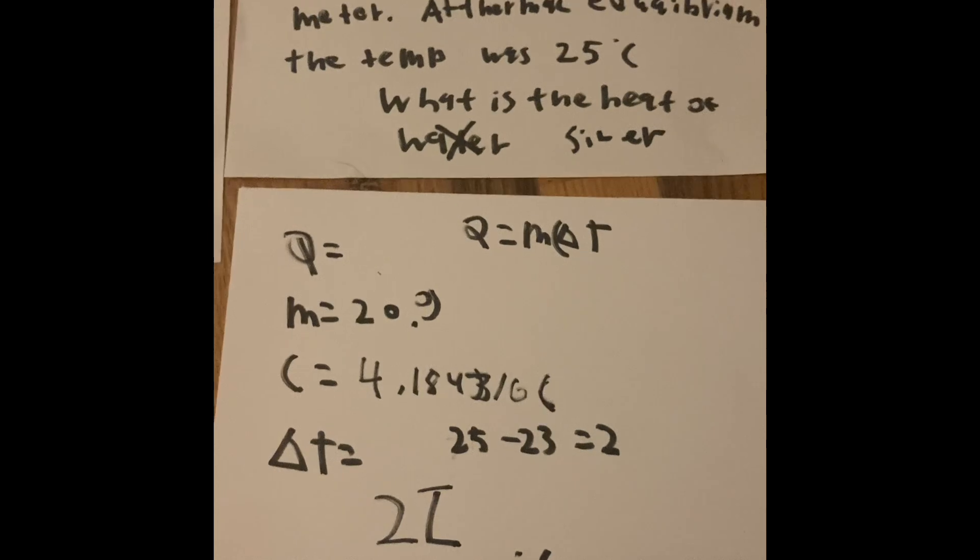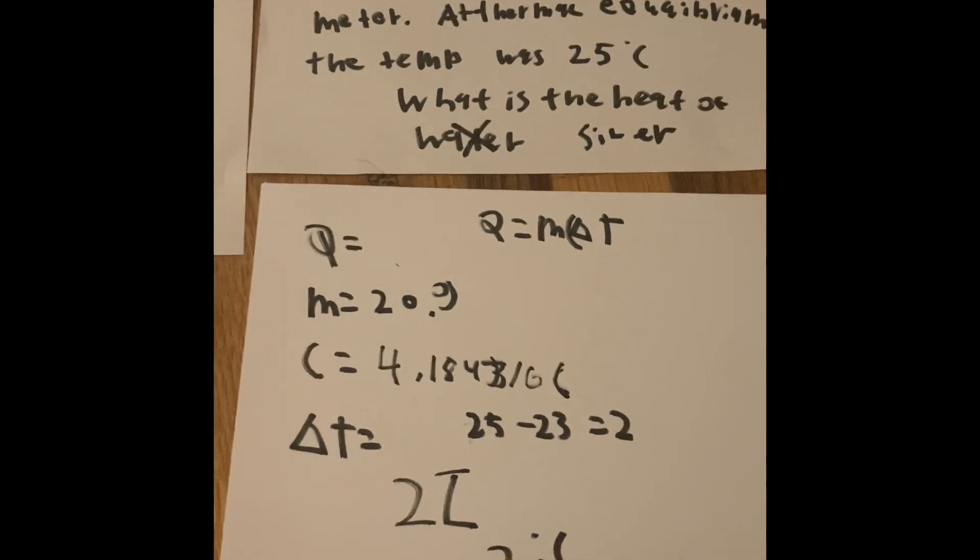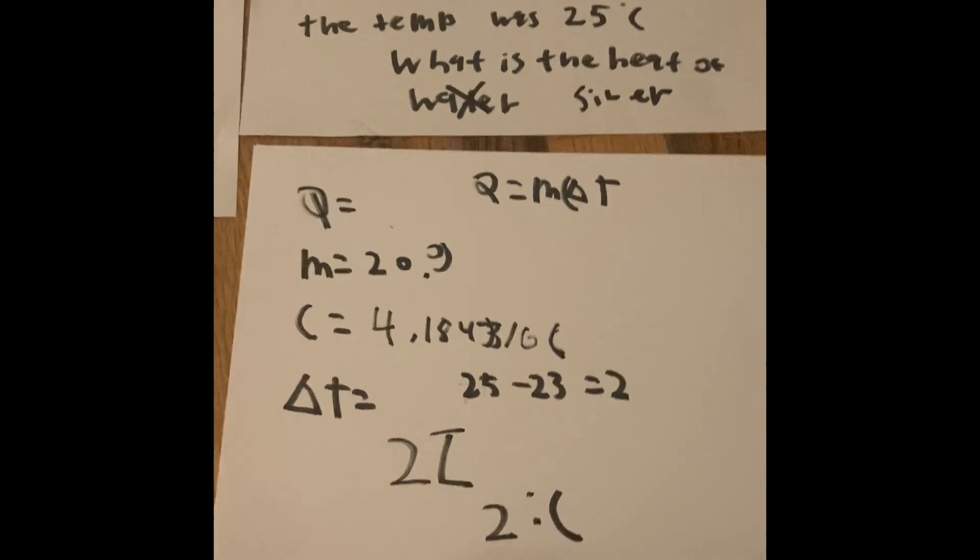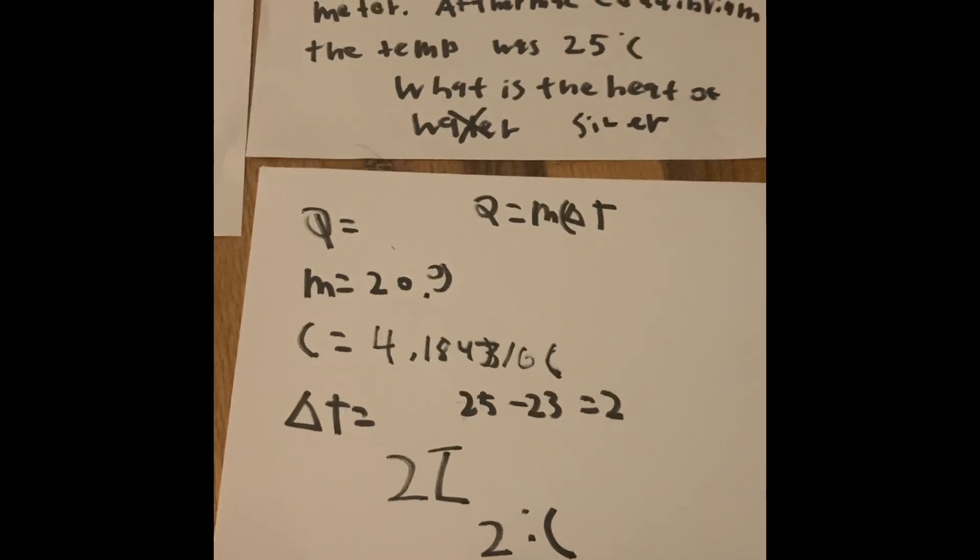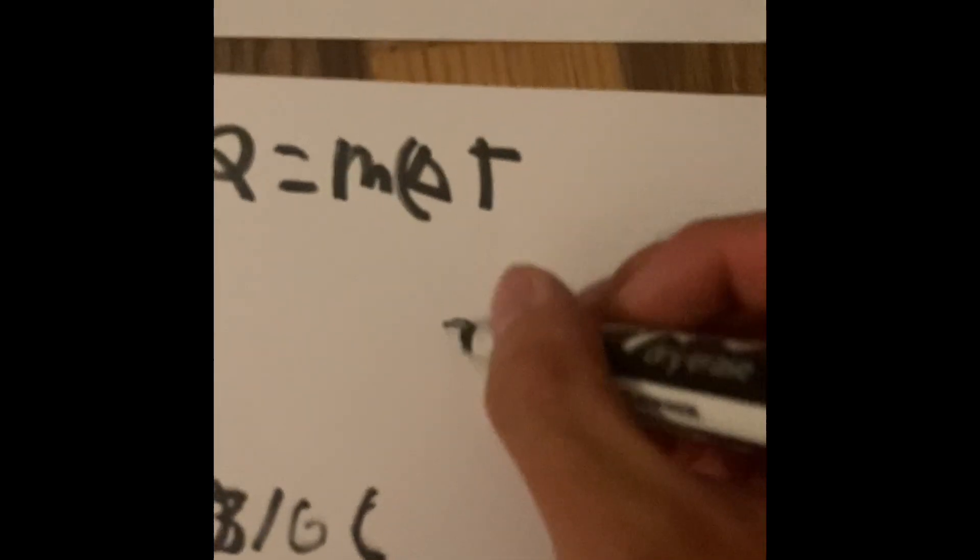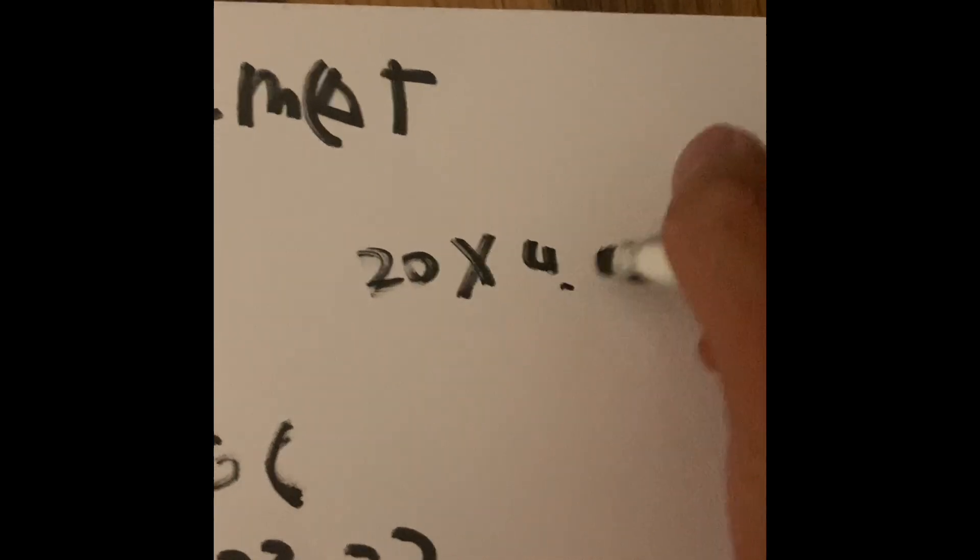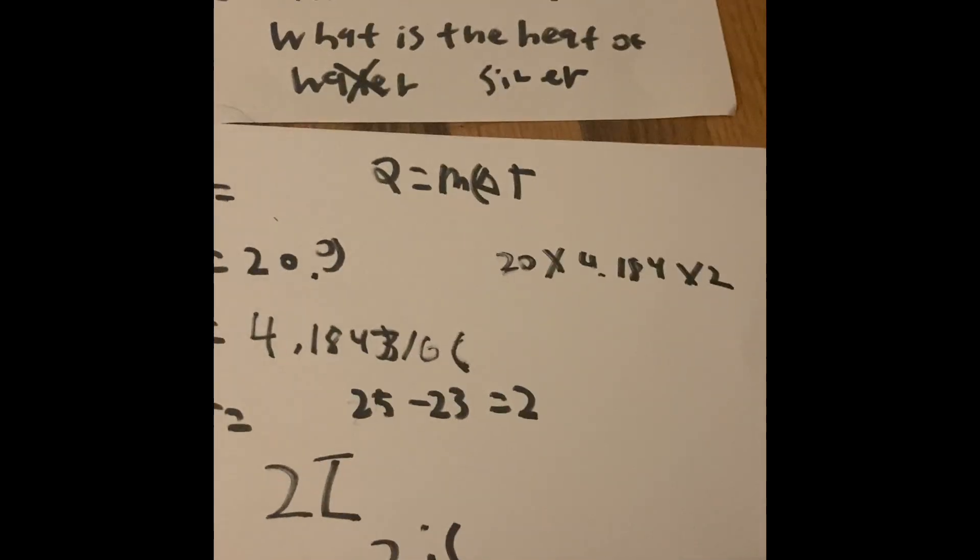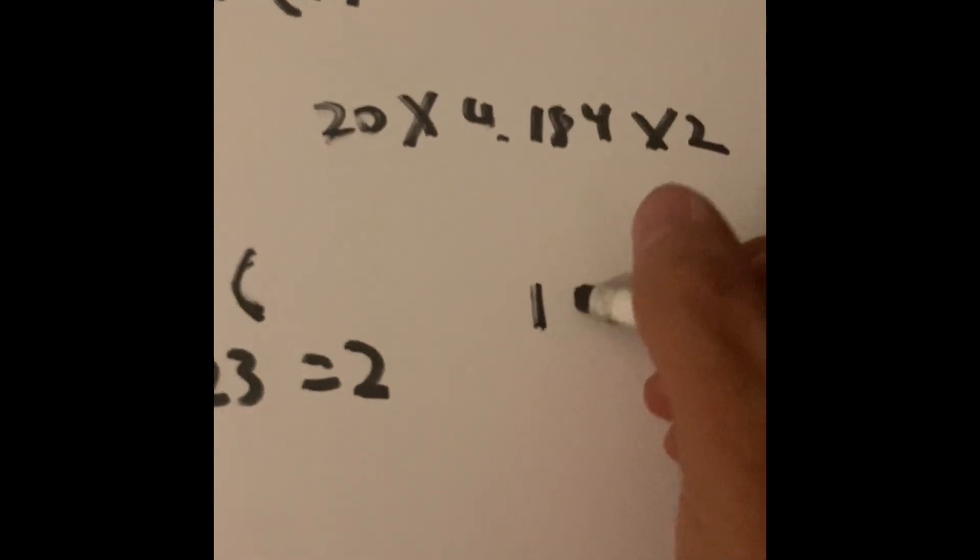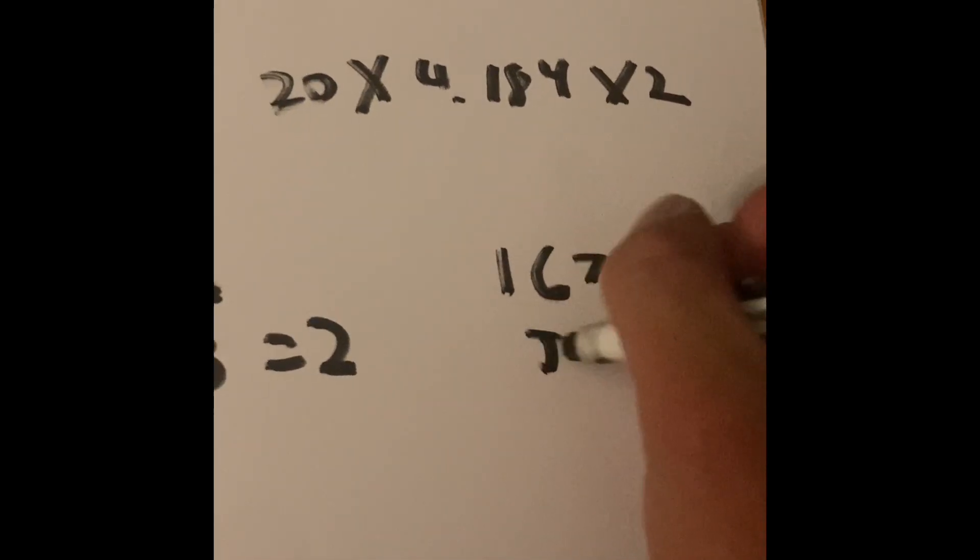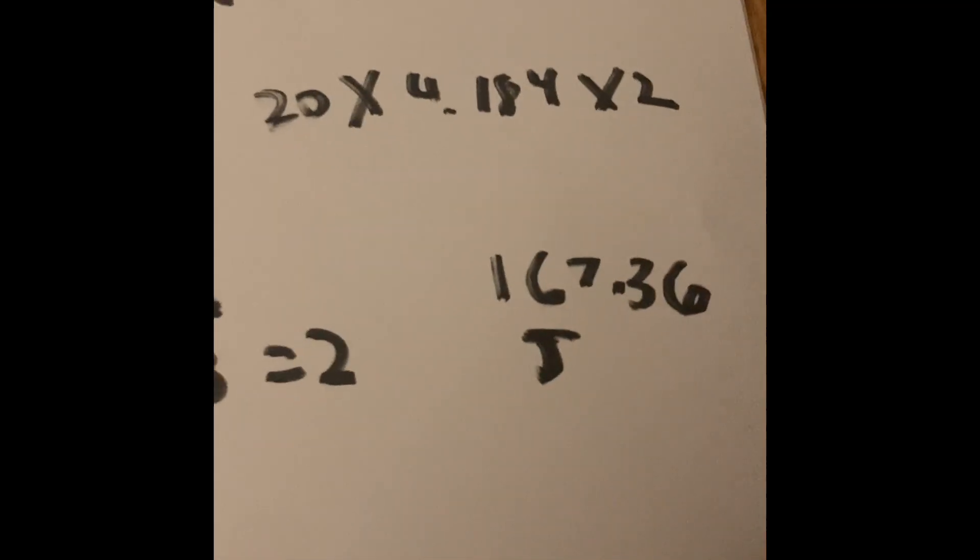Now we have all the information we need to find the energy of the water. Then we can transfer it to another formula. When you do 20 times 4.184 times 2, according to the formula as planned, you'll get an answer of 167.36. That is how much energy in joules the water has.